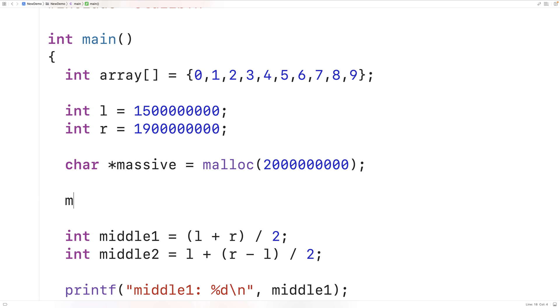We could actually set in the massive array at the index 1.7 billion a value that we could check for. So we'll just set at that index the value Y, the char uppercase Y. And then we'll check for that after we've calculated middle2.